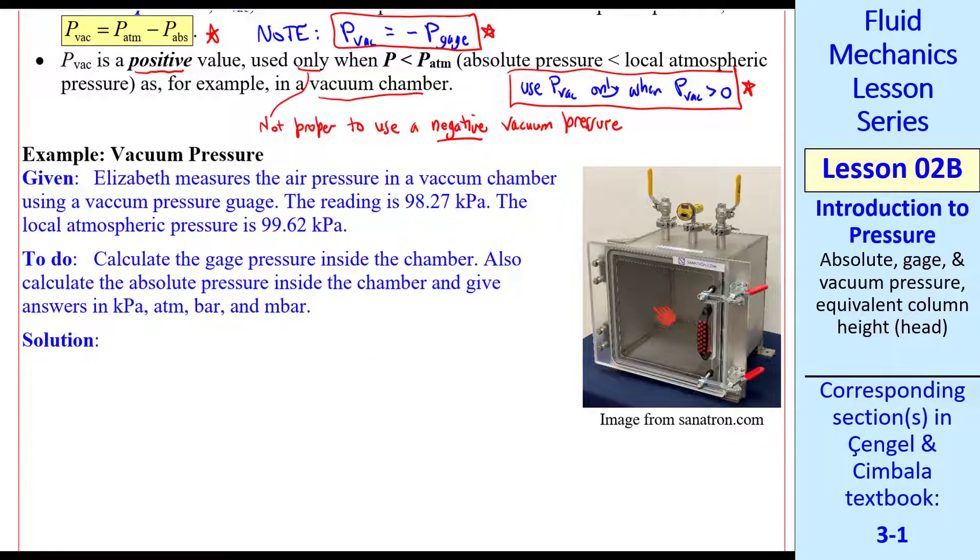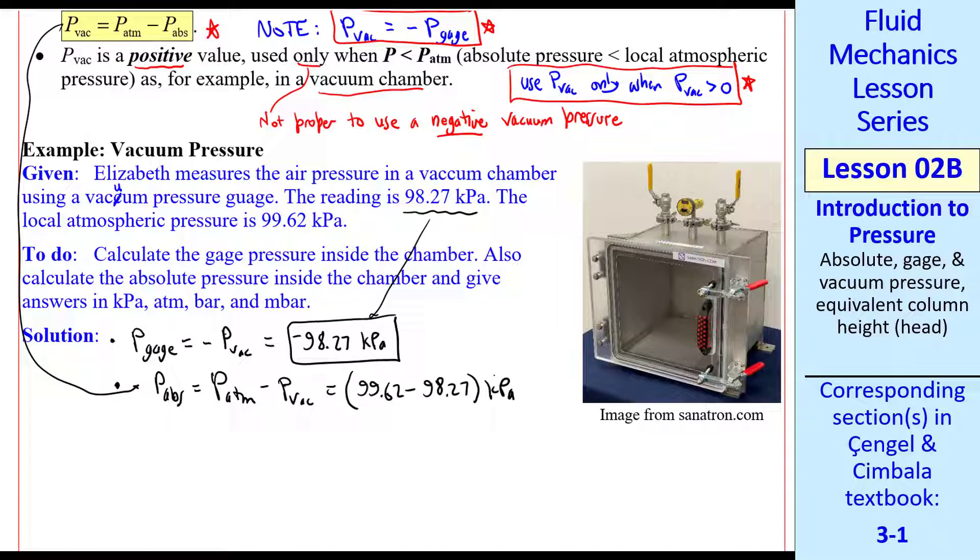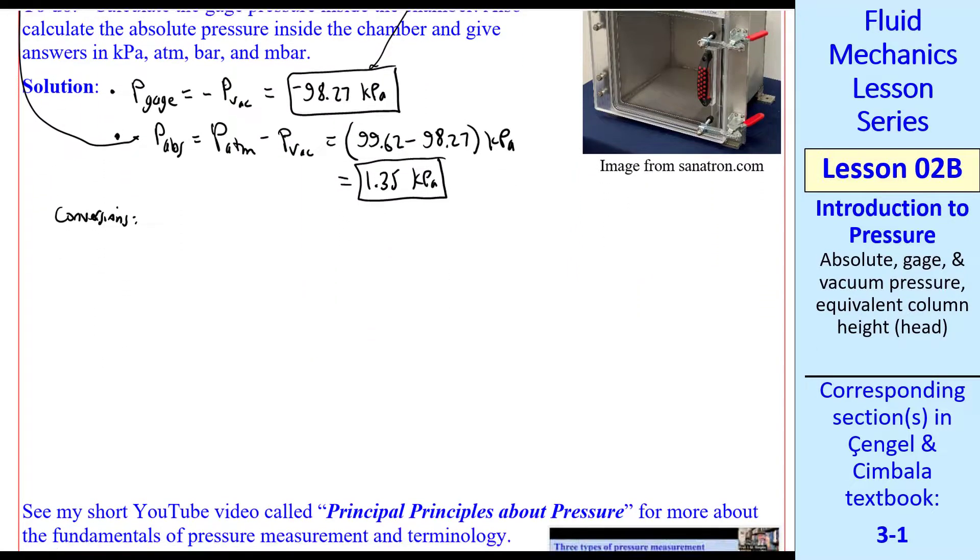Let's do another example problem. Here we measure the air pressure inside a vacuum chamber. We give the reading and the local atmospheric pressure. We need to calculate the gauge pressure inside the chamber, and also the absolute pressure in several units. First, P gauge is negative PVAC, so we have our answer right away for that. For absolute pressure, we use our equation defined above. So P abs is P atmosphere minus P vac. We plug in the numbers. Both of them are in kPa. And we get 1.35 kPa. Using proper subtraction with significant digits, three significant digits is appropriate here.